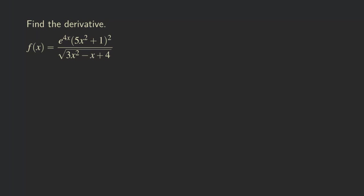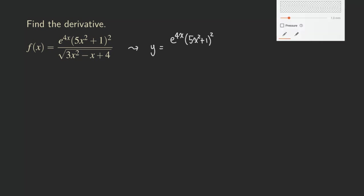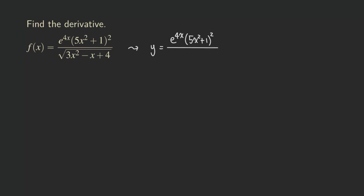So what we are going to do first is rewrite the function so that it looks like this — it's y. Instead of using f(x), because that notation is hard to work with, we are going to just use y. Then we are going to rewrite this function as e to the 4x, and then 5x squared plus 1 to the second power. For the denominator, instead of writing the square root, we should turn it into power form, so we get 3x squared minus x plus 4 raised to the one half power.